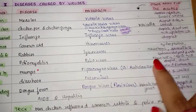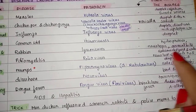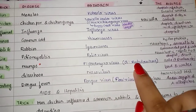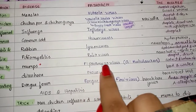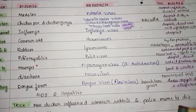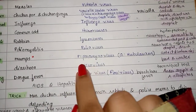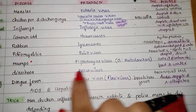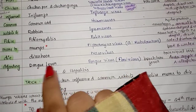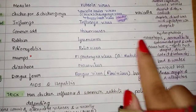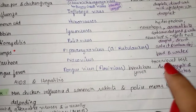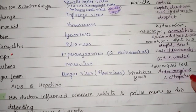For poliomyelitis, the pathogen is poliovirus; also neurotropic; transmitted by contaminated food and water. For mumps, the family is Paramyxovirus and the genus is Rubulavirus; spread by droplet, direct contact, and contaminated objects. For diarrhea (viral), the pathogen is Norovirus; spread by food and water. For dengue fever, the pathogen is Flavivirus; other name is break-bone fever; test is tourniquet test; spread by Aedes aegypti and Aedes albopictus mosquitoes.